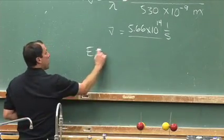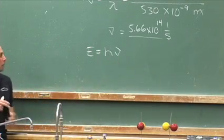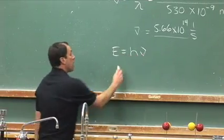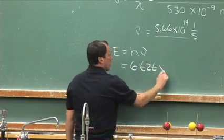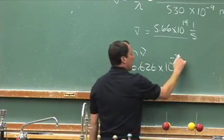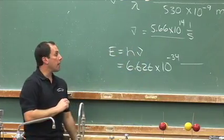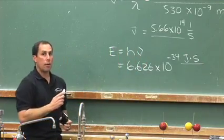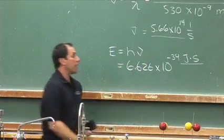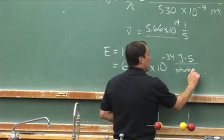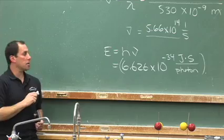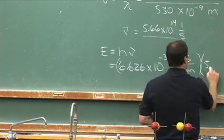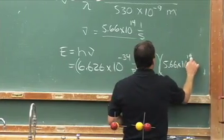We have an expression courtesy of Max Planck. Max Planck said the energy is equal to a constant, which is named Planck's constant, times the frequency. This constant is 6.626 times 10 to the negative 34th. The units of Planck's constant are joules times seconds per one photon. So that is h, Planck's constant, the energy times seconds per one photon, times our frequency that we just calculated, 5.66 times 10 to the 14th, 1 over seconds.